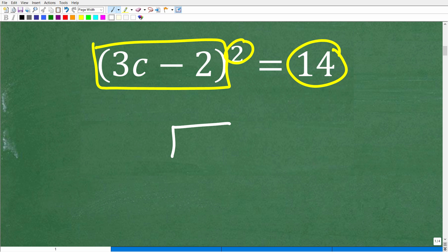We have something squared is equal to a number. For example, if I had x squared equals 4, to solve this basic quadratic equation, all I have to do is take the square root of both sides. So x is going to equal plus or minus 2.